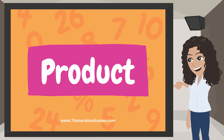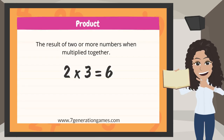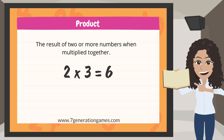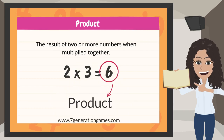Product: the result of two or more numbers when multiplied together. For example, 2 times 3 equals 6 — 6 is the product.